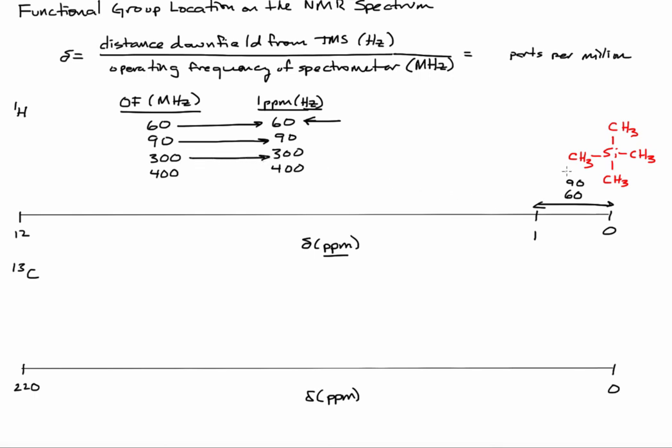We go to 300, there's now 300 hertz between zero and one. And at 400, there's 400 hertz between zero and one part per million. So in terms of resolution, the more hertz you have between one part per million, the finer the picture looks of the spectrum, so to speak.